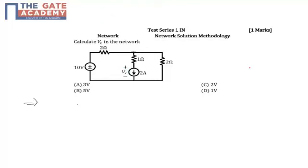So in the beginning, let's name this node as V. We need to find out the voltage across this current source, so it's better that we apply nodal analysis at this node. With the help of nodal, we can find out the voltage across this whole arm, which we have named as V. So, apply the nodal at node V.